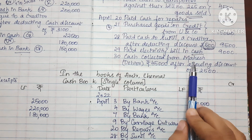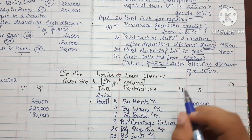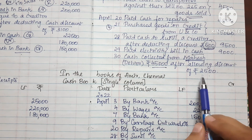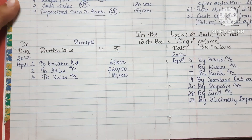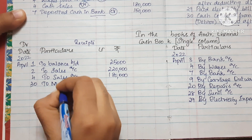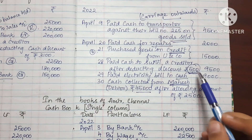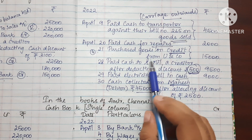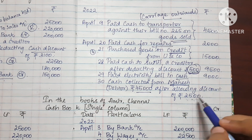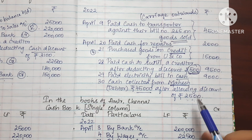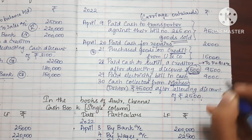On the 30th, cash collected from Magesh. It is a cash receipt, so it goes on the debit side. The amount received is Rs. 45,000 and the discount allowed is Rs. 25,000. We record the amount of Rs. 45,000 and include the discount in the ledger account, not directly in the single column cash book.